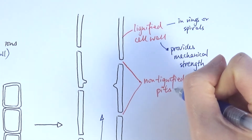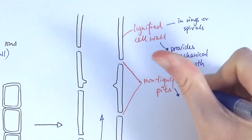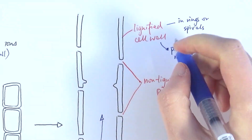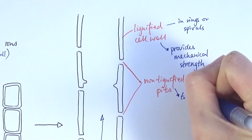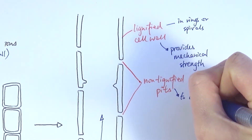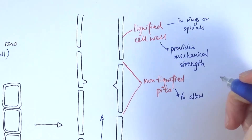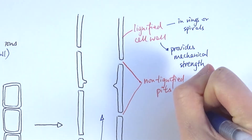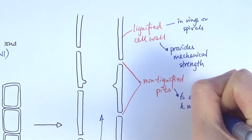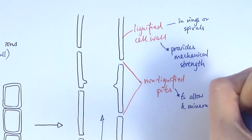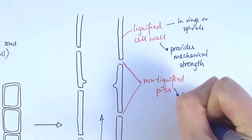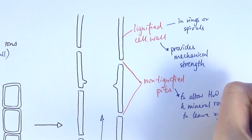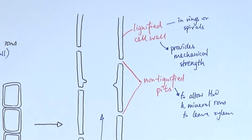Because lignin itself is waterproof, water can't actually move out of the lignified cell wall very easily. But because we've got these non-lignified pits which only have the plasma membrane in them, they allow the water and mineral ions to move out to the surrounding cells if necessary. So it's about allowing them to actually leave the xylem when they get to the right places.